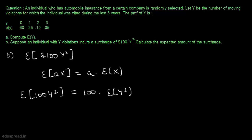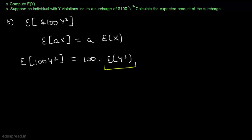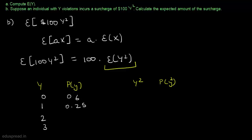To calculate the expected value of Y², let's first determine the probability mass function of Y². We are given that Y can take the values 0, 1, 2, and 3, with corresponding probabilities 0.6, 0.25, 0.10, and 0.05.